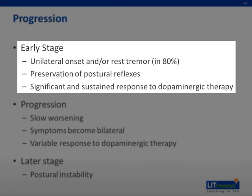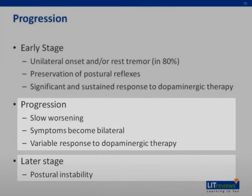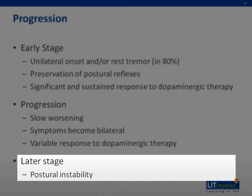In the early stages of Parkinson's disease, patients often present with unilateral symptoms and/or rest tremor. There is often preservation of postural reflexes and significant and sustained response to dopaminergic therapy. As Parkinson's disease progresses, there is slow worsening with symptoms becoming bilateral and the response to dopaminergic therapy becomes variable. In the later stages, patients often experience postural instability.